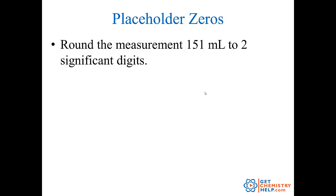How about 151, rounded to two significant digits? The first two significant digits are the one and the five. The first non-significant digit is this one, which is less than five, so I round down and drop it. But I can't turn 151 into 15 — I have to put a zero in the ones place, making it 150. These are placeholder zeros and placeholder zeros are never significant, so this is still just two significant figures.